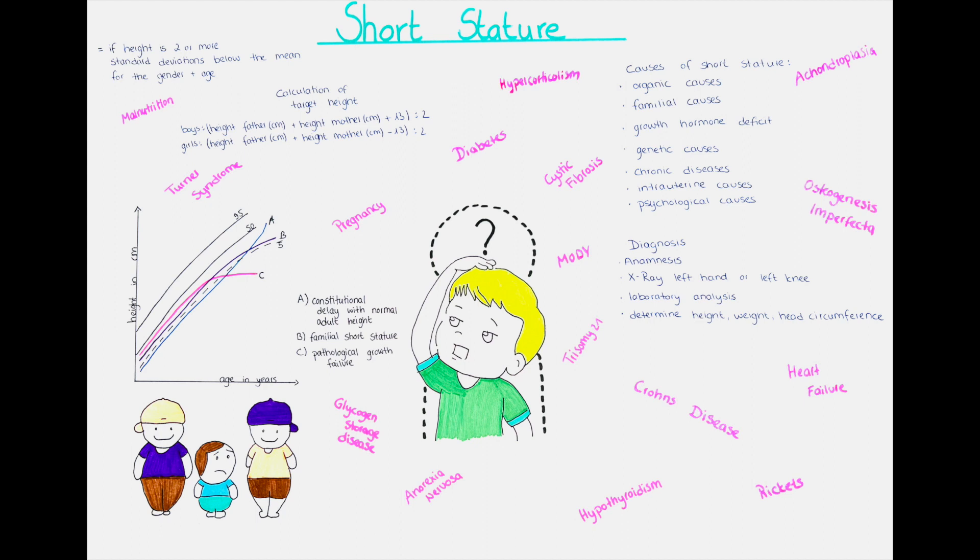Familial short stature is the most common cause. It is not considered as a disease as usually both parents are short and by the calculation of the target height we see that the children will be short as well.